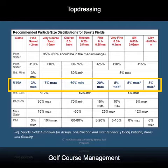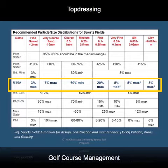A common top dressing sand used on native soils would adhere to the United States Golf Association sand, highlighted here in yellow. With 60% of the sand particles in the medium coarse size range, this sand is considered a uniform medium coarse sand.